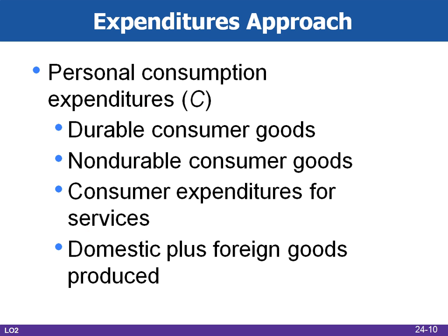Let's focus on the expenditure side. Personal consumption expenditures, indicated by C, covers all expenditures by households on goods and services during a year. Approximately 10% are for durable consumer goods with a life of three years or more, another 30% go to non-durable goods such as food, clothing, and gasoline, and the other 60% are for services — leading to the U.S. economy frequently being referred to as a service economy.